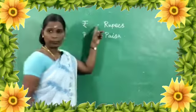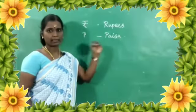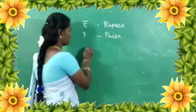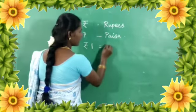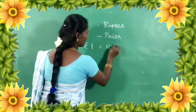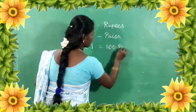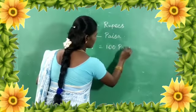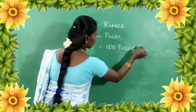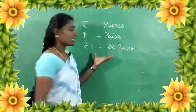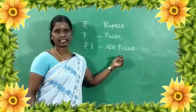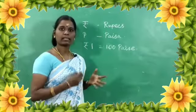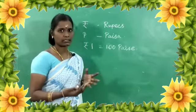1 Rupee is 100 Paisa. 1 Rupee has 100 Paisa. We can exchange money.